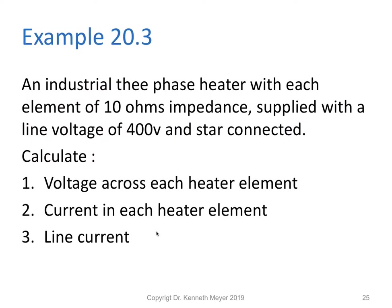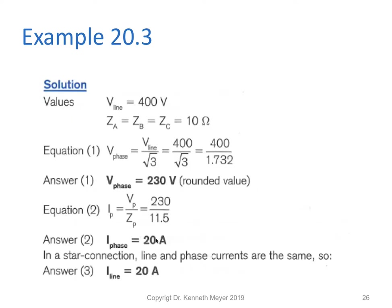Let's do a quick example. We have an industrial three-phase heater where each element has 10 ohms impedance, supplied with a line voltage of 400 volts, star connected. We want to find the voltage across each heater element, the current in each element, and the line current. We have 400 volts supply and each impedance is 10 ohms. The phase voltage equals the line voltage divided by root three: 400 divided by 1.732 gives us 230 volts.